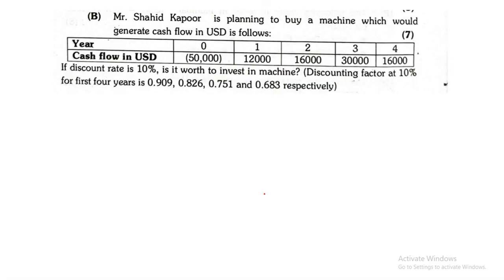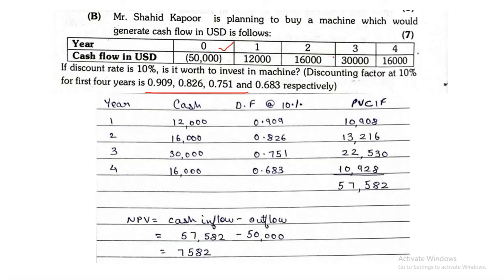Next, Mr. Shahid Kapoor is planning to buy a machine which would generate cash flows in USD. Years 1 through 4 and the cash flows are given. The negative value is the investment. Discounting factors are also given. Columns for years 1, 2, 3, 4 — cash inflows are 12,016 and 30,016. Multiply by PV factor to get PV, then add up the total PV to get total cash inflow. To find NPV: cash inflow minus outflow — 57,582 minus 50,000 — giving NPV of 7,582.